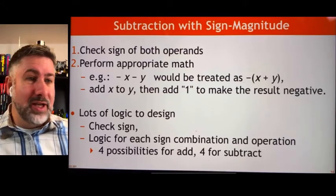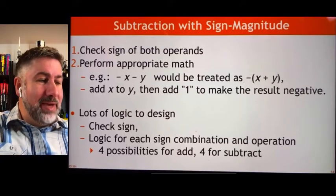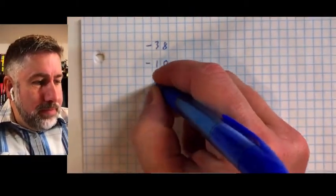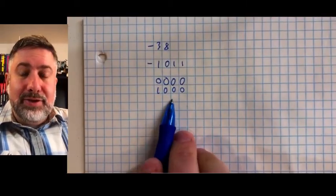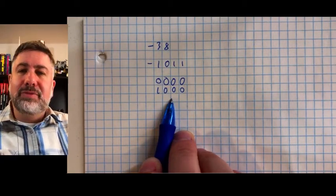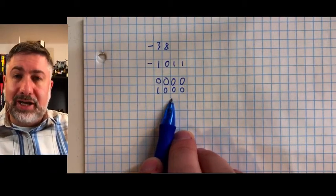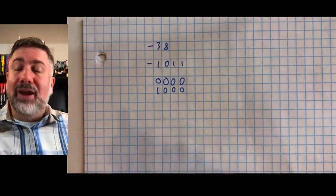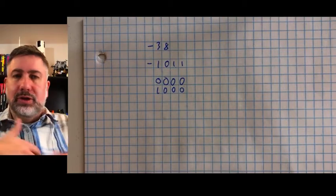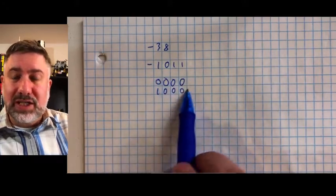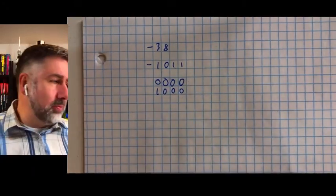There's another problem with sign magnitude: you have two representations of zero — positive zero and negative zero. This is very problematic because if there's more than one way to represent zero, we have to build in extra logic to check if the answer to a problem is zero. For example, if we're going through a loop and counting down a counter to zero, we want to know when it reaches zero, and having two representations makes our logic that much more complicated.